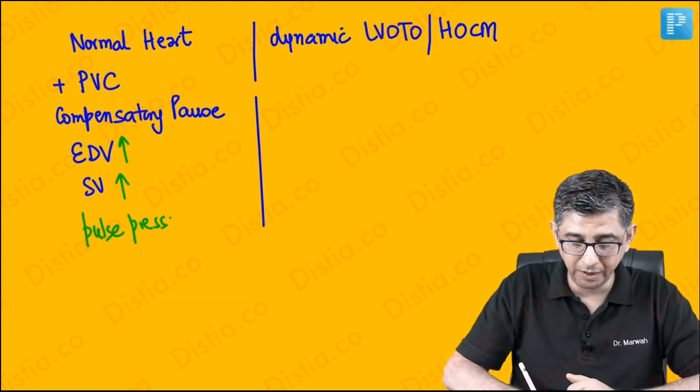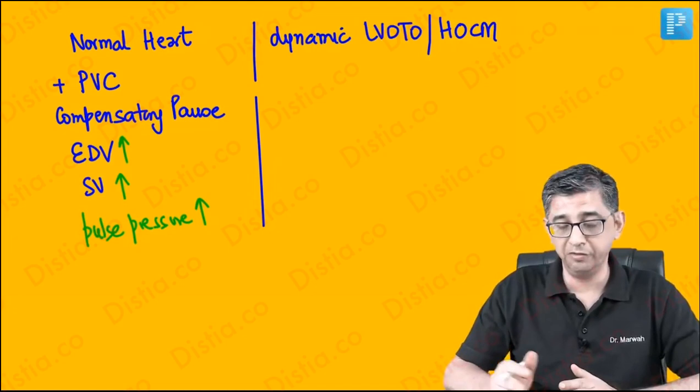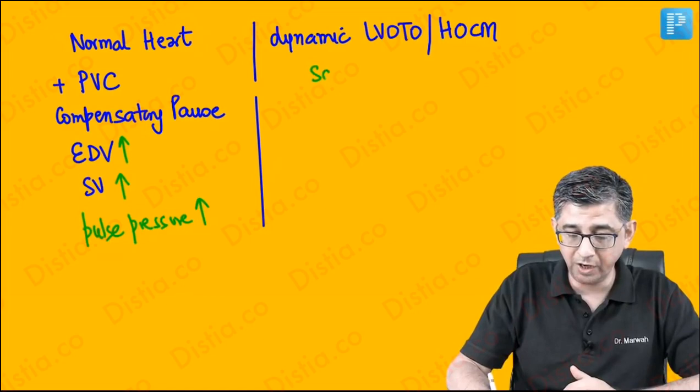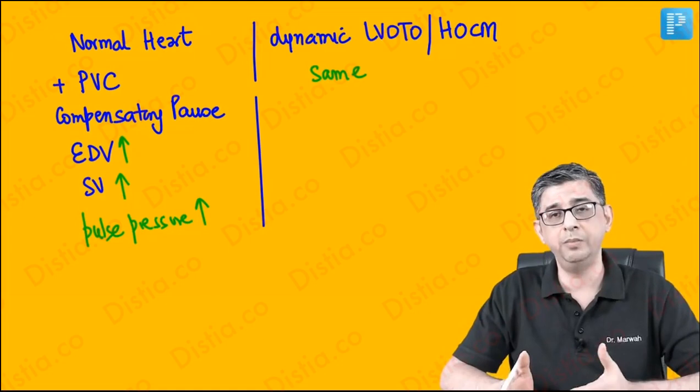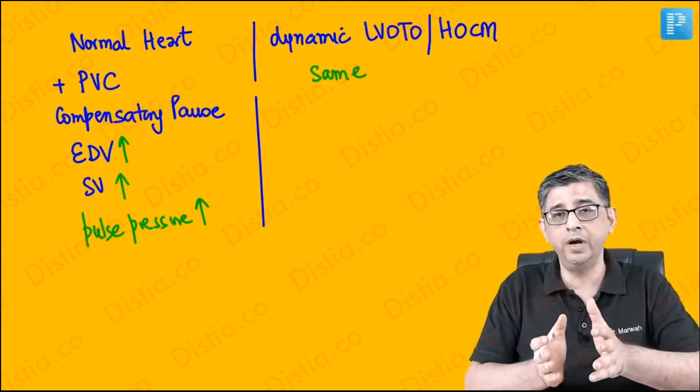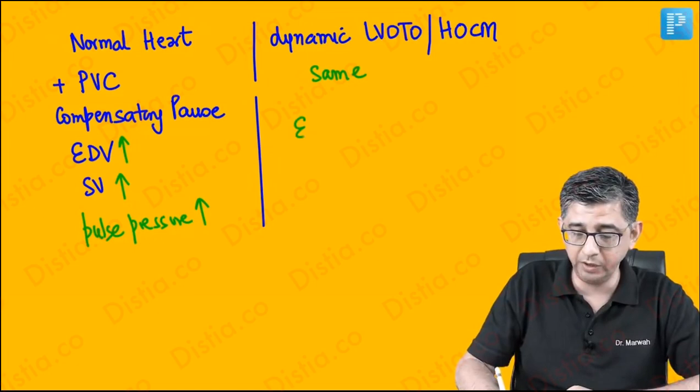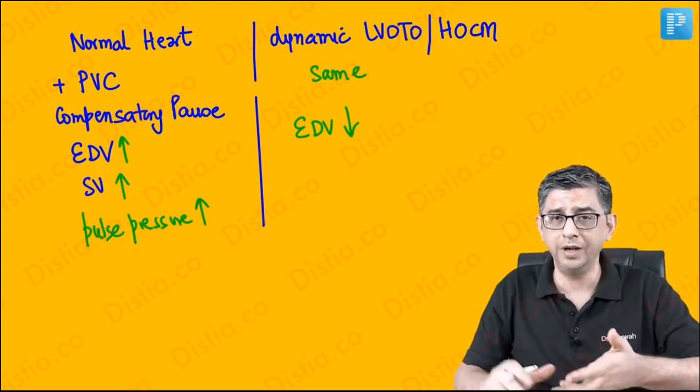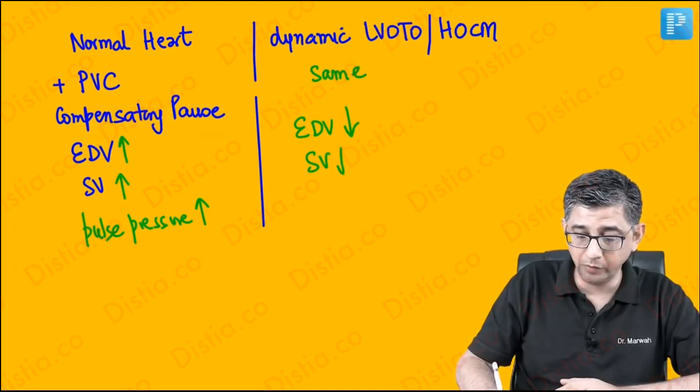Now, if a person has dynamic left ventricular outflow tract obstruction and also has a premature ventricular contraction, it will obviously be followed by a compensatory pause. But because of the abnormal hemodynamics, the SAM movement and septal hypertrophy are literally squeezing the outlet of the left ventricle. So the end-diastolic volume following the compensatory pause would actually be lesser, because there is abnormal hemodynamics in the heart.